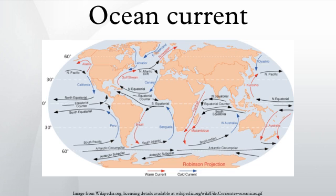An ocean current is a continuous, directed movement of seawater generated by the forces acting upon this mean flow, such as breaking waves, wind, Coriolis effect, cabbeling, temperature and salinity differences, with tides caused by the gravitational pull of the Moon and the Sun.